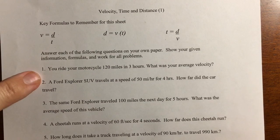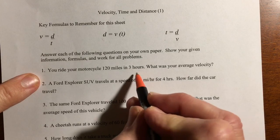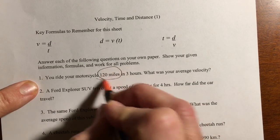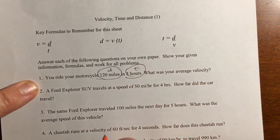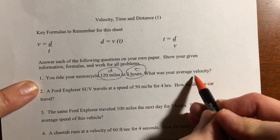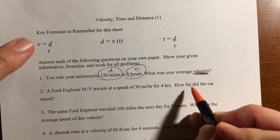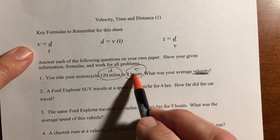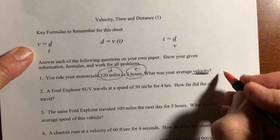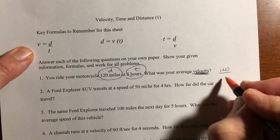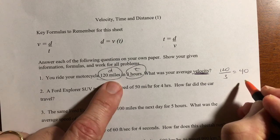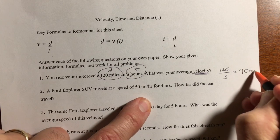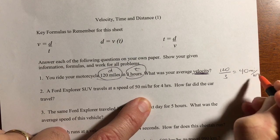First one says, you're riding your motorcycle 120 miles in three hours. 120 miles, that's a distance. Hours is a time. It says, what's your average velocity? So we're trying to find velocity, and here's the distance and time. So it's going to simply be 120 divided by three equals 40. Forty what? Well, it's miles per hour.